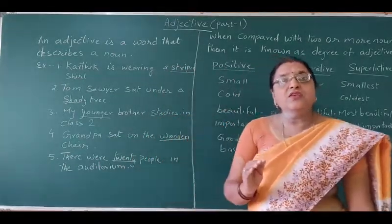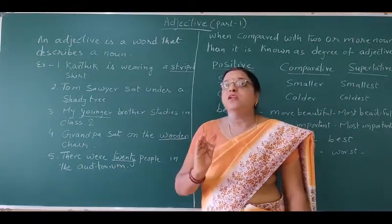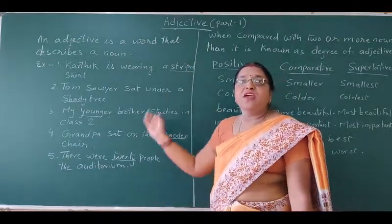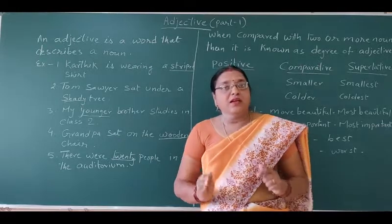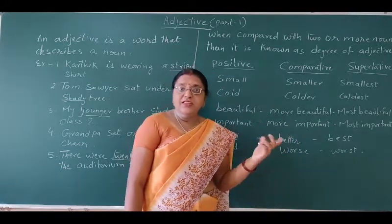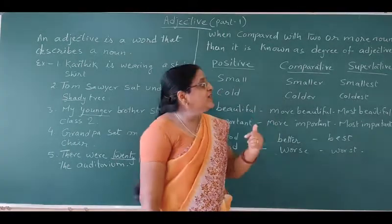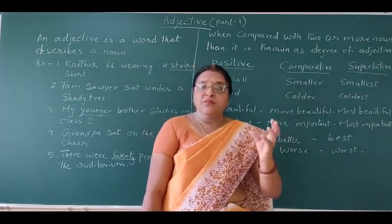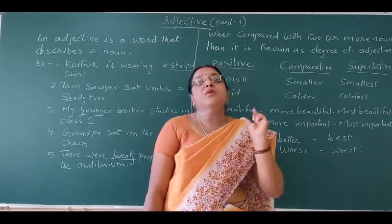This is the case when you are talking about the description of one noun — that is simple adjectives. But there are conditions when there are more than one or more than two nouns. Then, the degrees of adjective come. Whether it is a positive degree — positive degree means when you are talking about only one noun, you are talking about positive degree.